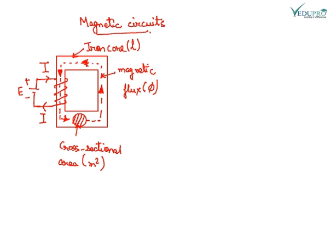The closed path followed by magnetic flux is called a magnetic circuit, just like the closed path followed by current is called an electric circuit. So this is a magnetic circuit shown here.